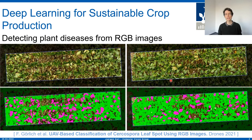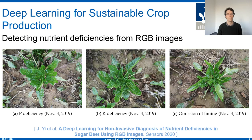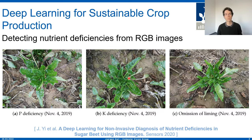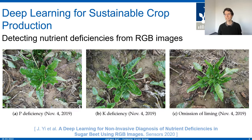These are examples where deep learning has been used. The last example is from my group, where we actually want to recognize nutrient deficiencies. Given an image, we want to predict what is actually missing — here also from a sugar beet. In all these examples, deep neural networks are used. I want to give a brief overview of how it works in theory, and then explain how it actually works in practice.